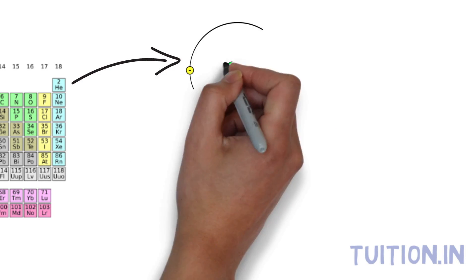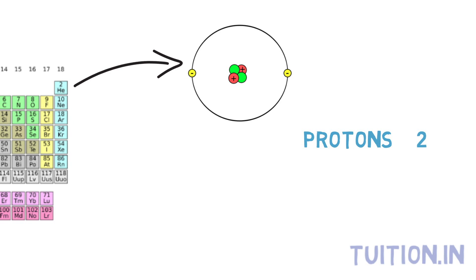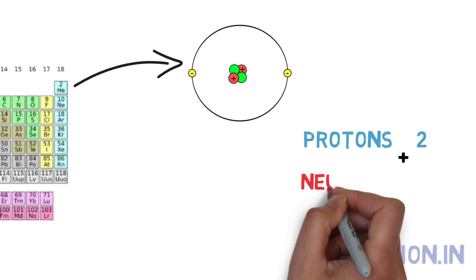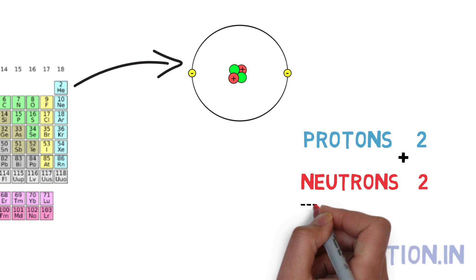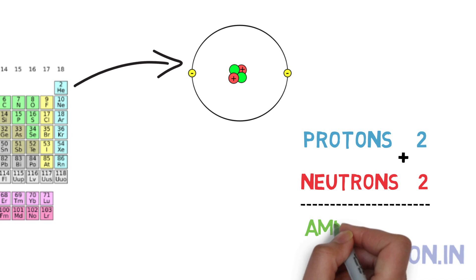For instance, a helium atom has two protons so its atomic number is two. It also has two neutrons. Adding number of protons and neutrons, we get four which is helium's atomic mass unit.